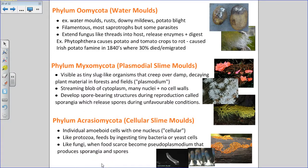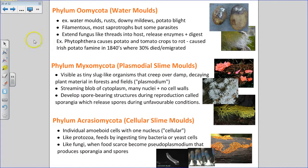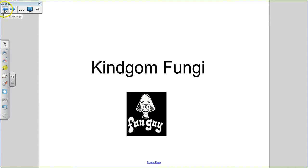The third phylum — acrasiomycata — are the cellular slime molds. They're individual amoeboid cells with one nucleus that feed by ingesting tiny bacteria or yeast cells like protozoa. But like fungi, when food becomes scarce they can produce sporangia and spores. The last two groups are fungus-like because of the spores they produce under unfavorable conditions, while the first group is fungus-like in how they feed through extracellular digestion using filaments embedded in whatever they're living on.